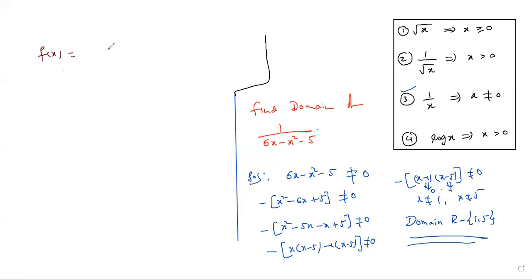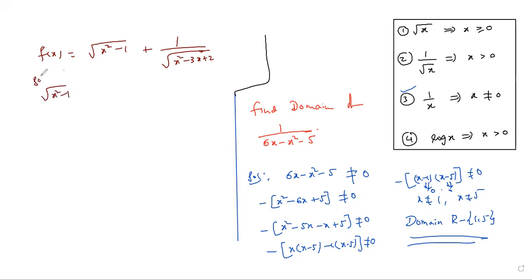f(x) equals root of (x squared minus 1) plus 1 over root of (x squared minus 3x plus 2). This question is a combination of two terms. Find the domain separately — first take x squared minus 1, find its domain, then handle the second term, and finally combine the answers. The given first term is in the form of root x, so the domain condition is x greater than or equal to 0. So the first step: x squared minus 1 greater than or equal to 0.